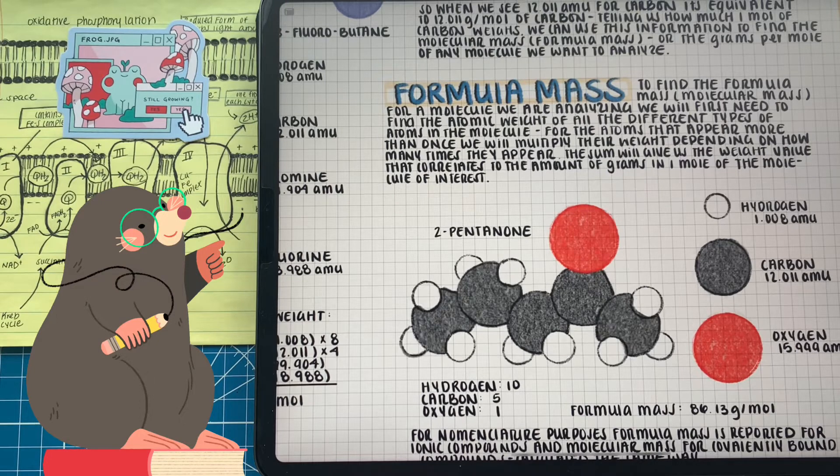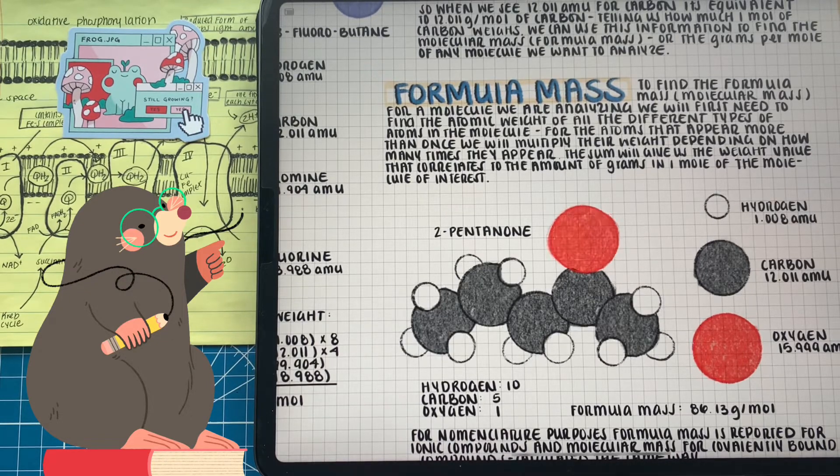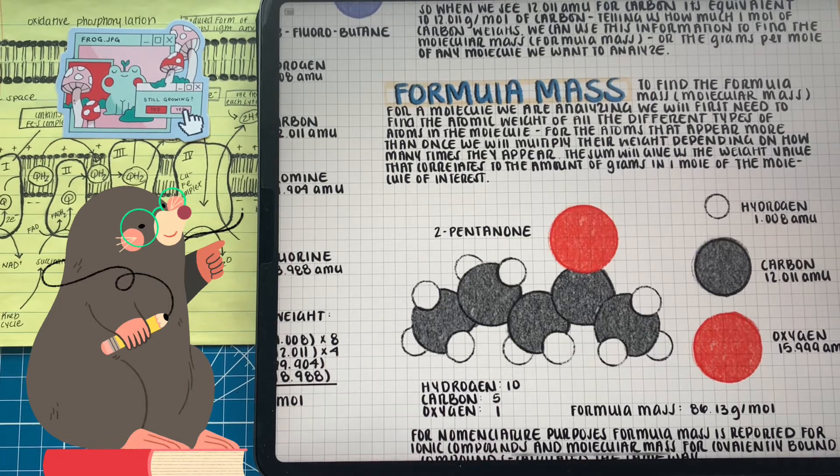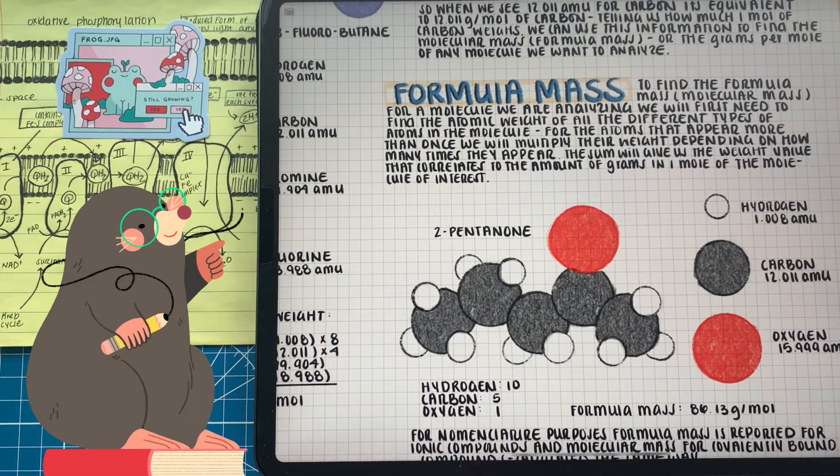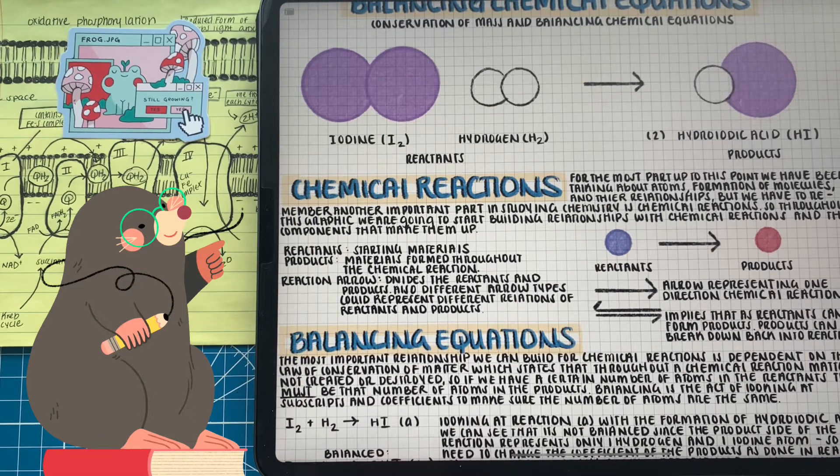Let's use the example of 2-pentanone as an example of finding its molecular weight. This molecule has five carbons, 10 hydrogens, and one oxygen. What we're going to do is look at a periodic table and find the atomic weight of hydrogen, carbon, and oxygen. Then we're going to take the value of hydrogen, multiply it by 10, carbons by five, and leave oxygen just as is. We're going to add all these numbers together and then we're going to find the formula mass or the molecular weight of 2-pentanone. Now we have a formula mass of 86.13 grams per mole of 2-pentanone.